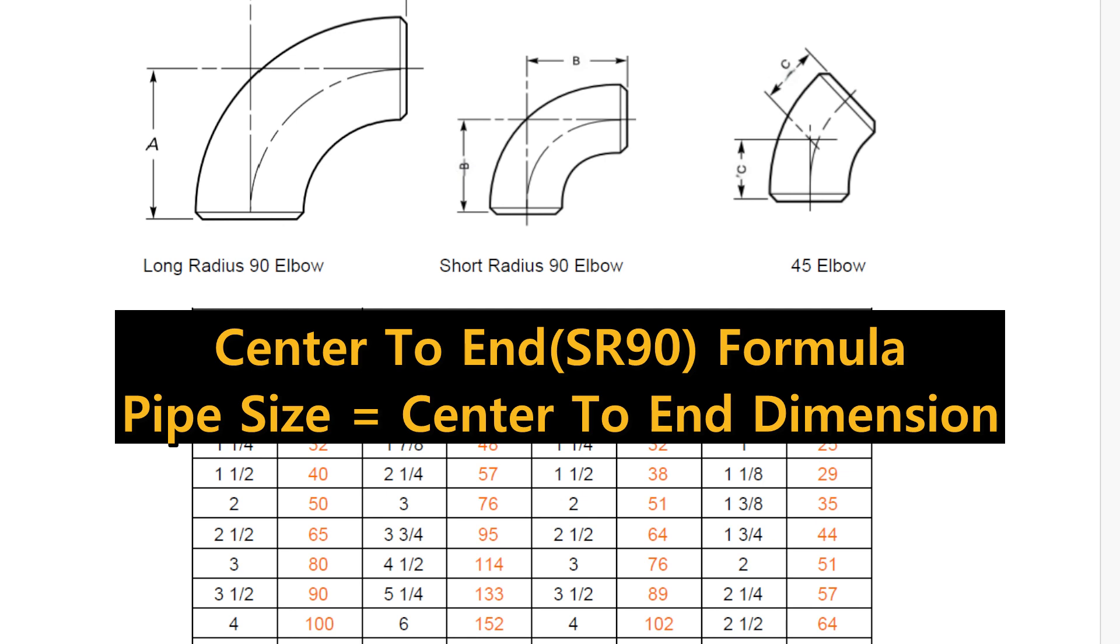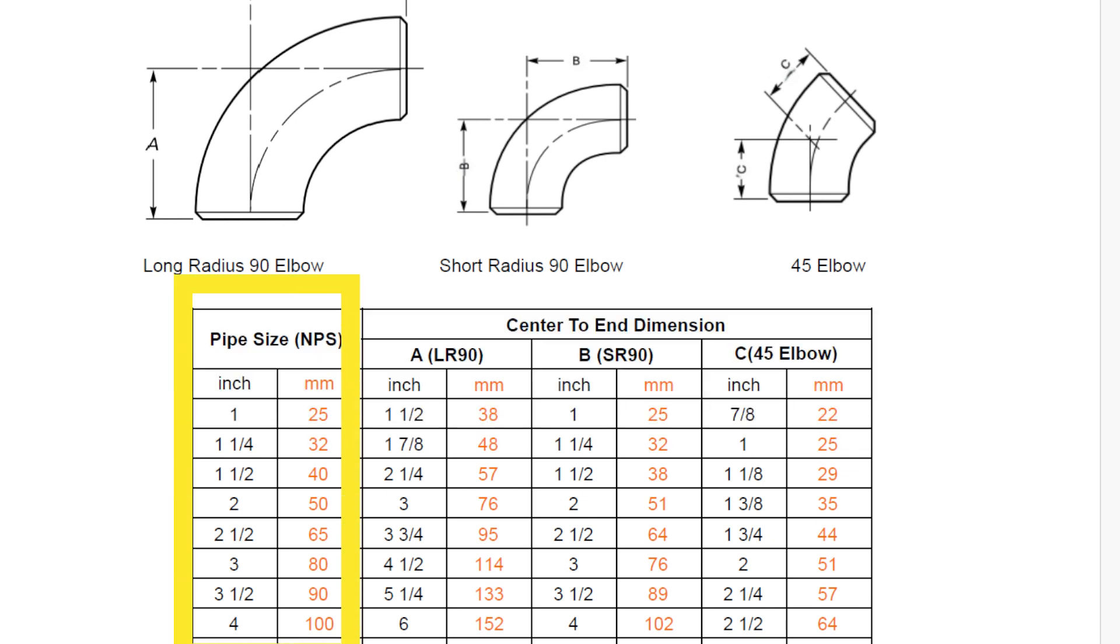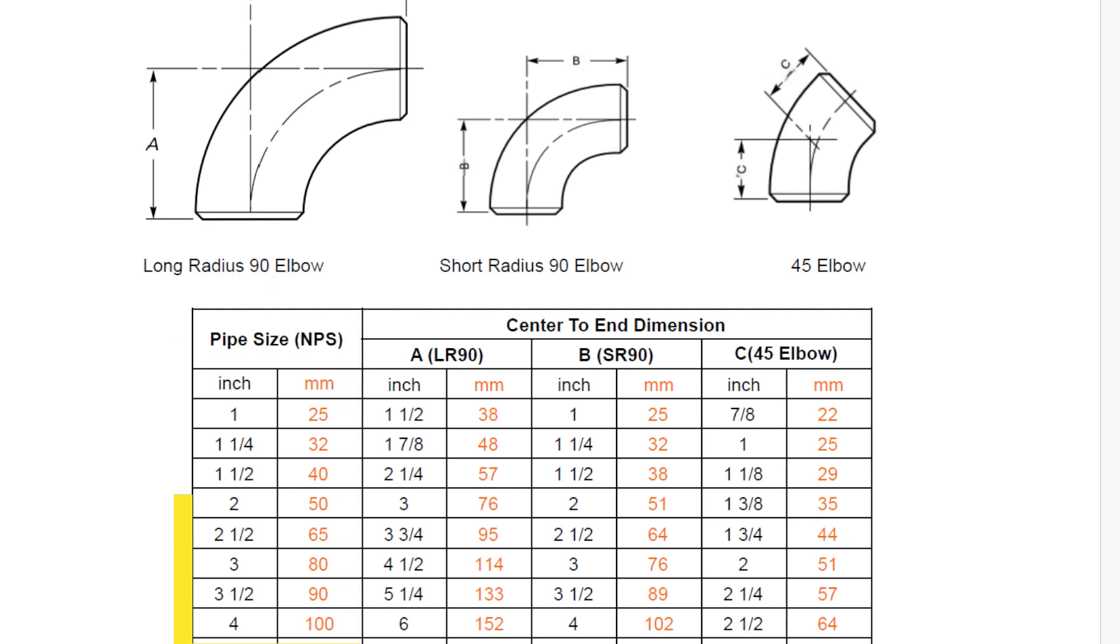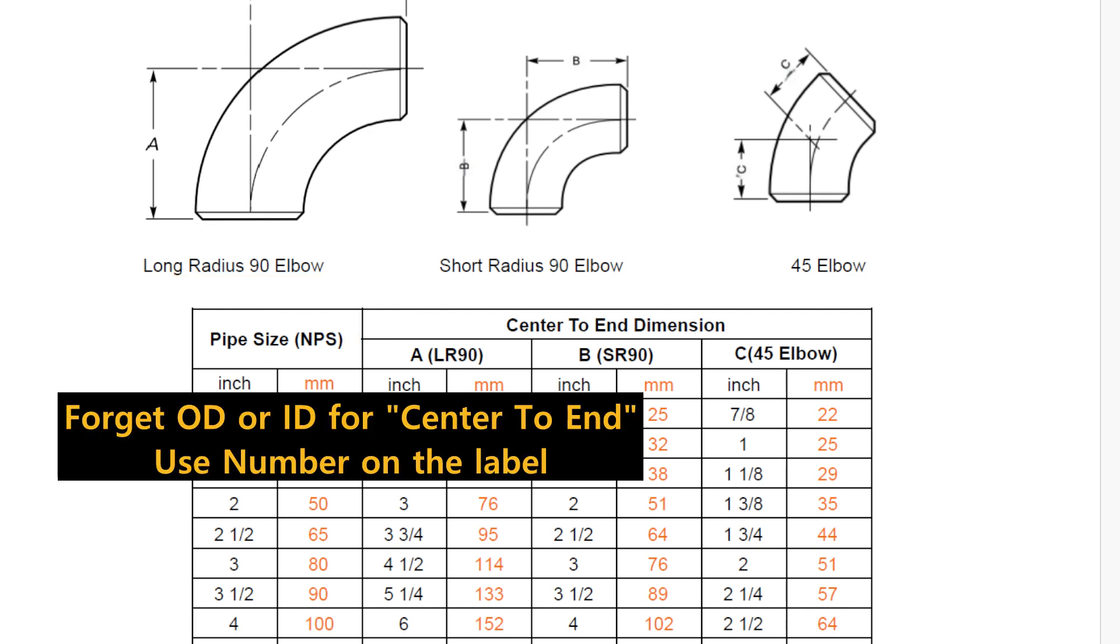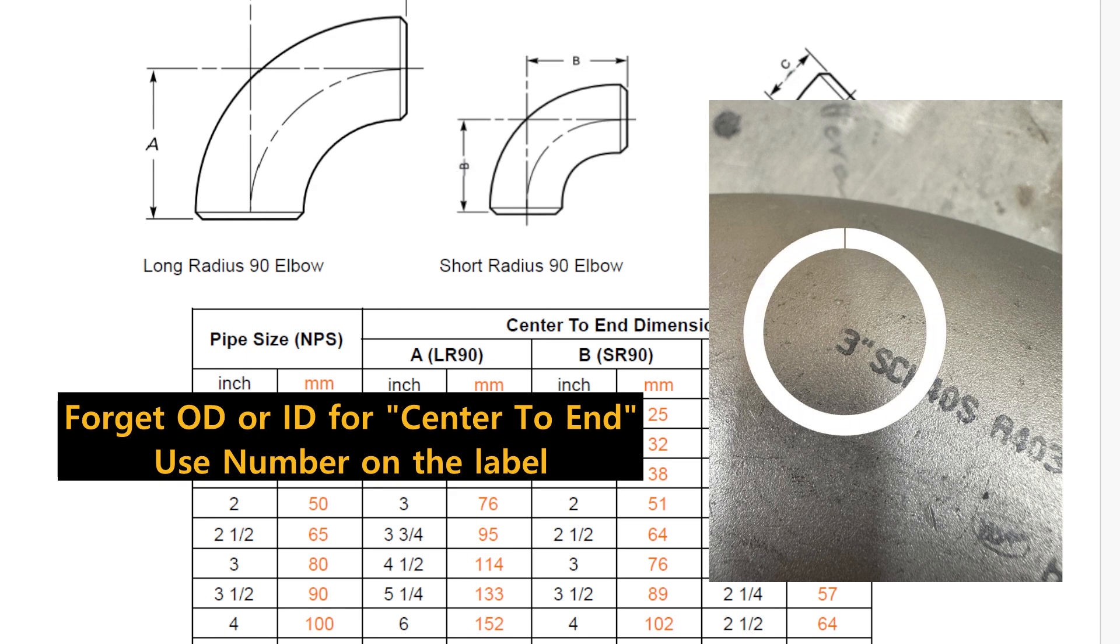But you have to keep in mind this. The pipe size on the chart is based on the nominal pipe size system called NPS. For example, the actual outside diameter of 3-inch pipe or fittings such as elbow or tee is 3 and a half, not 3 inches. So when you calculate center-to-end, you should use the pipe size, not actual OD or ID. Forget the outside diameter or inside diameter to find out the center-to-end dimension. Look at the label on the fittings and use that number.